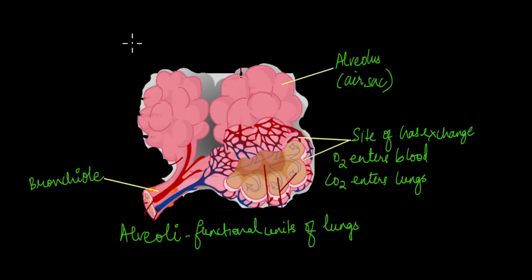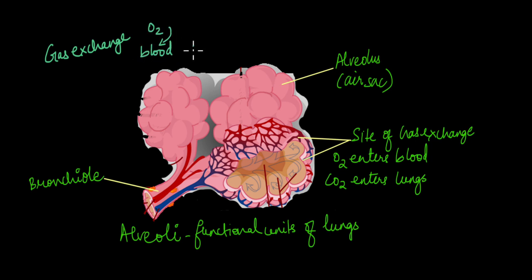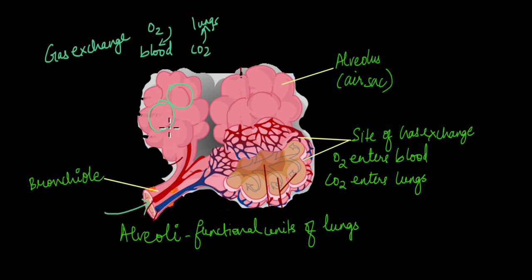Now we'll look at how gas exchange takes place inside the lungs. Gas exchange — oxygen from the lungs entering the blood and carbon dioxide from the blood entering the lungs — occurs at sites called alveoli. Alveoli are the functional units of the lungs and can be thought of as air sacs or balloons. They are connected to many tiny blood capillaries that serve each alveolus, and these blood vessels are the sites of gas exchange.